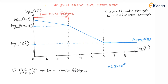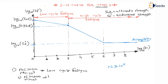After 10³ revolutions — that is, after 1000 revolutions — the fatigue is called high cycle fatigue. When number of revolutions completed are more than 1000 (more than 10³), it is considered as high cycle fatigue.